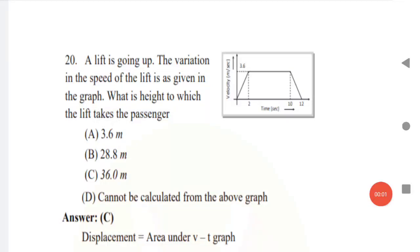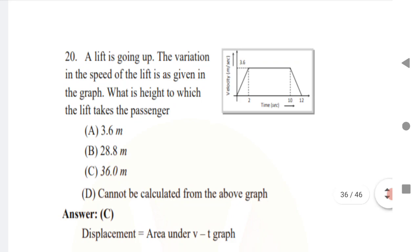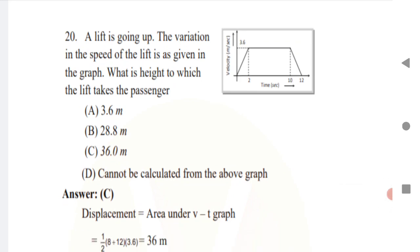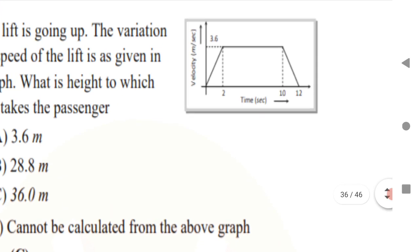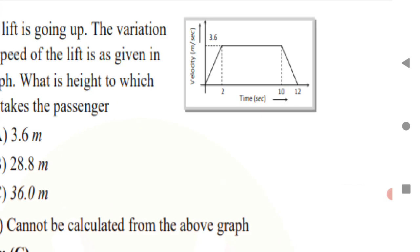Welcome to STA Academy. Today we are going to discuss part 2 of straight-line motion for TS and MSet exams. The first question — question 28 — involves a lift going up, with the variation of speed given as a graph. When you see the graph, you may get an idea that it's a trapezium, so you need to find the area of the trapezium.